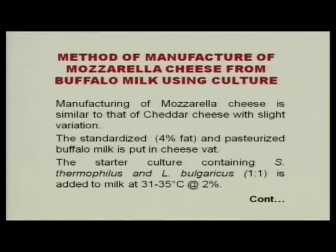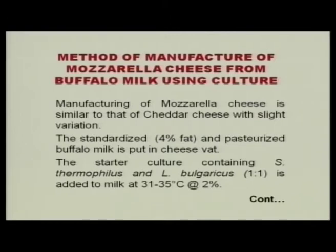The method of manufacture is similar to cheddar cheese but with slight variations. Milk is standardized to 4% fat and pasteurized buffalo milk is used. The casein-to-fat ratio is very important — it should be around 0.7. If casein is high there will be problems, and if fat is less you will not get the desirable mellowness and nutty flavor. If fat is more, losses could be higher. Pasteurized milk is used to ensure safety for consumption.